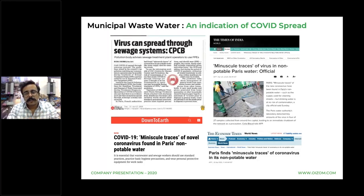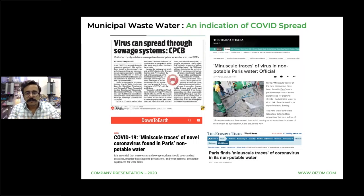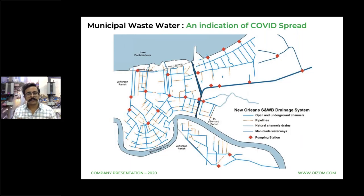There are also interesting findings related to water bodies. India's central authority CPCB has found that the virus can spread through sewage systems and has made plant operators aware of necessary precautions. Minuscule traces of the virus have also been found in Paris's non-potable water systems — drinking water has not yet shown any data. As traces of the virus are found in sewer systems, it becomes an aid to identify asymptomatic patients in a region. Identifying such hotspots based on virus trace data can be useful to increase testing frequency region-wise.